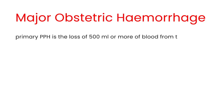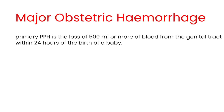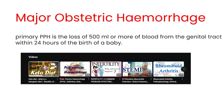PPH is the most common form of major obstetric hemorrhage. The traditional definition of primary PPH is the loss of 500 milliliters or more of blood from the genital tract within 24 hours of the birth of a baby. Further classification and causative factors have been discussed in our PPH video, and we encourage you to watch the previous video first to have a brief idea and better understanding.